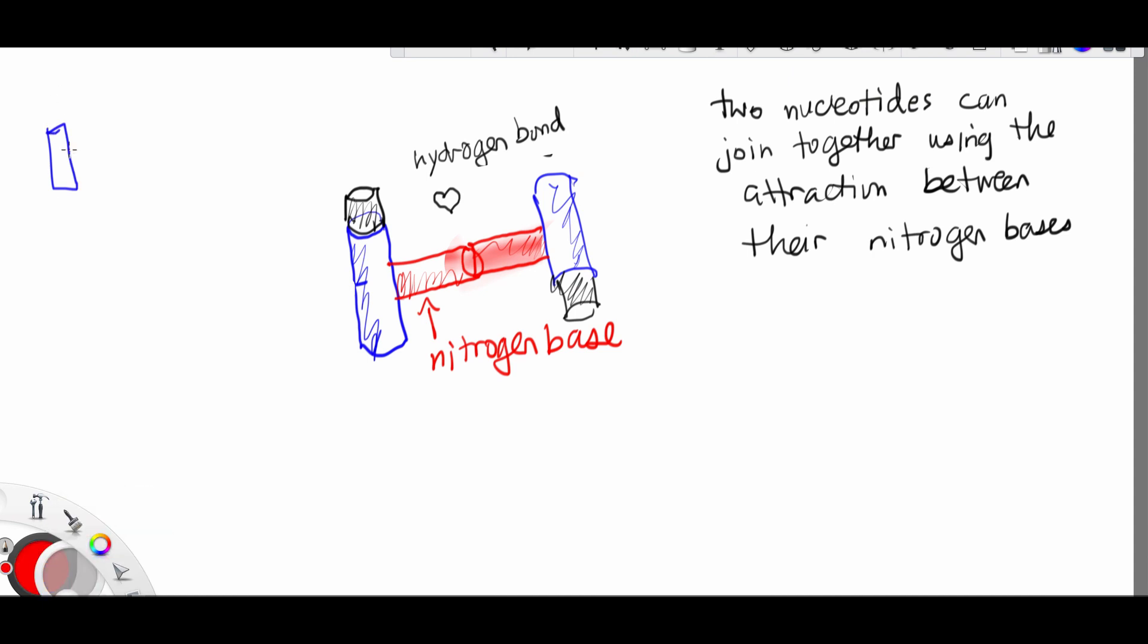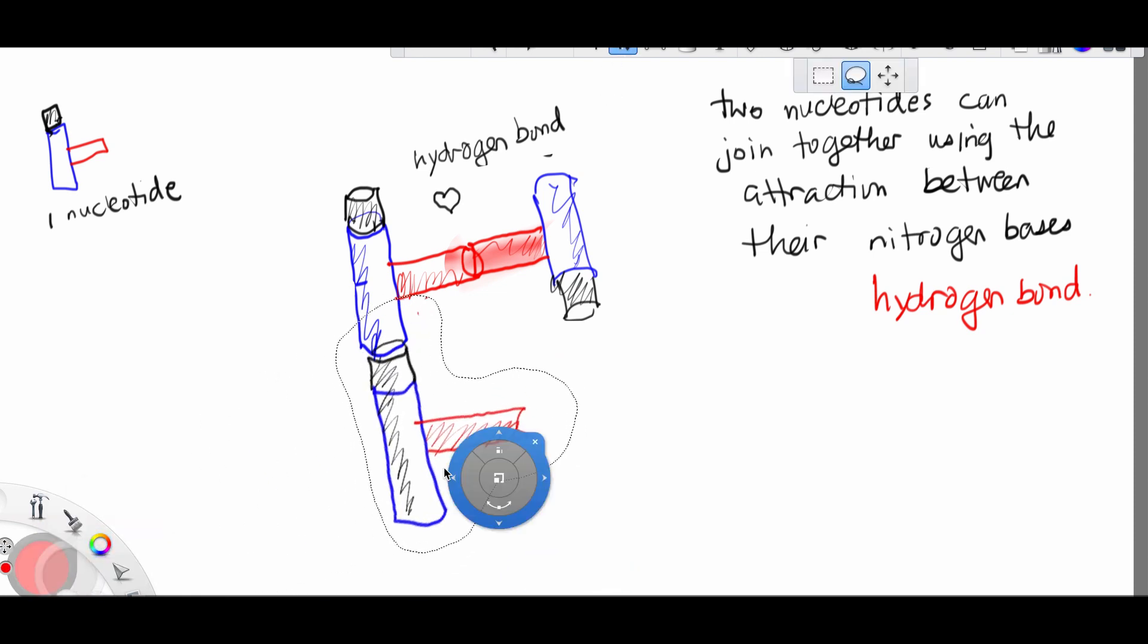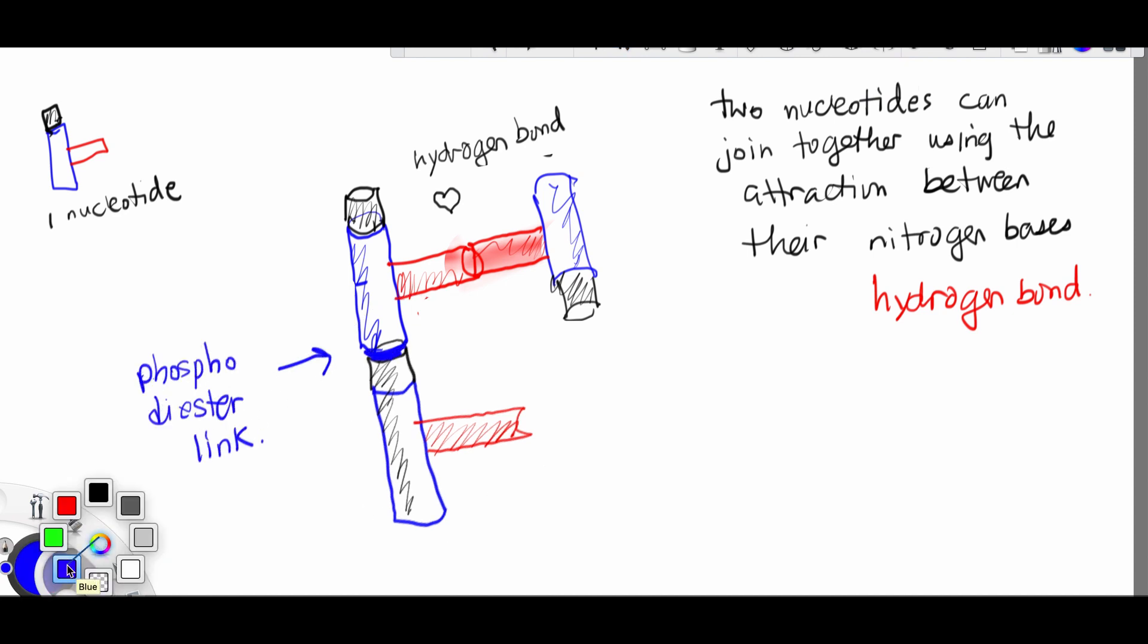That's not the only way that a nucleotide can join together. The hydrogen bond between the nitrogen bases is not the only way. If we draw another nucleotide, then we can see that it can join together like this. And this is a phosphodiester link, a stronger bond than the hydrogen bond.